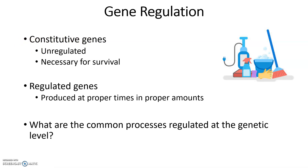Constitutive genes are unregulated — they are being made consistently. These genes tend to be necessary for the survival of the organism, so they are always being produced at a constant level. These tend to be housekeeping genes. Then you have regulated genes. These are the genes we're about to talk about — they have to be made in certain cells at certain times in proper amounts. This is what's going to be met by regulation.